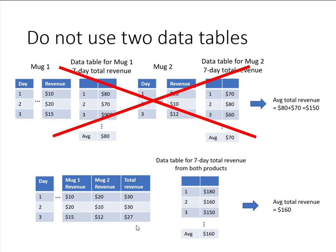The reason you should not do it the first way is simply because we are building one model to find out the 7-day total revenue from both mugs. What the incorrect approach does is essentially create two separate models — one model for each mug. That's not what we're trying to simulate. We want one model that considers both mugs together.